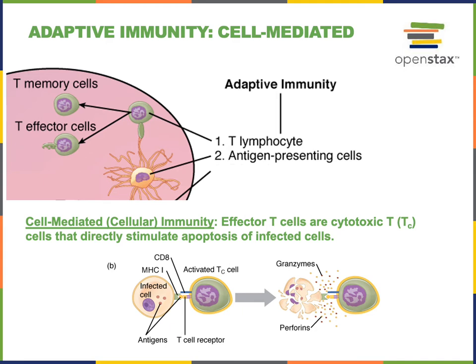The effector T cells are cytotoxic T cells that can directly stimulate apoptosis of an infected cell. If one of our cells becomes infected with a virus, that cell could display antigens from that virus on the surface to activate T lymphocytes, and the activated cytotoxic T cells will release cytotoxic granules containing granzymes and perforins that will stimulate apoptosis of the infected cell. This cell-mediated immunity destroys the infected cell without releasing the pathogens inside, so any viruses will not be able to infect neighboring cells.